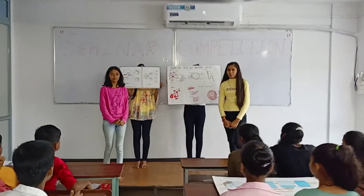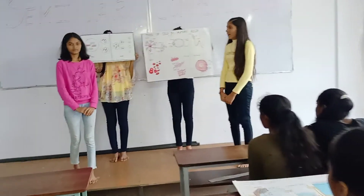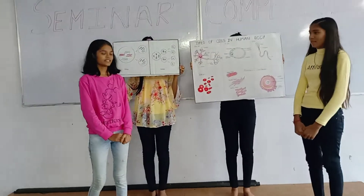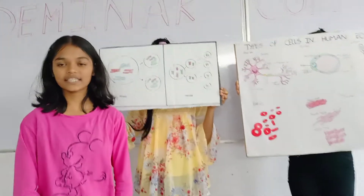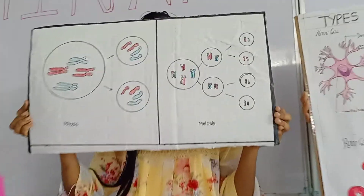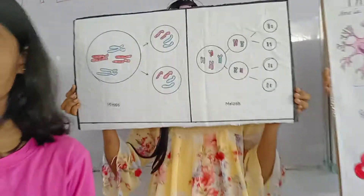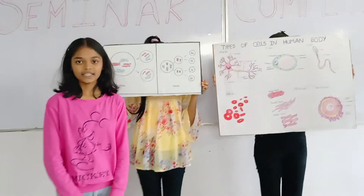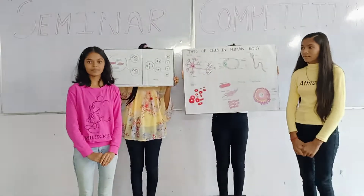Our second topic is mitosis and meiosis. Meiosis is a process where a single cell divides twice to produce four cells containing half the amount of genetic information. These are our sex cells — eggs in females and sperm in males.